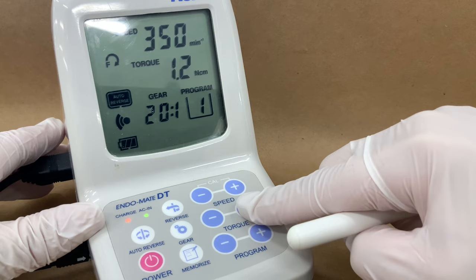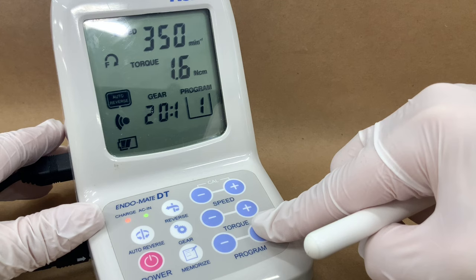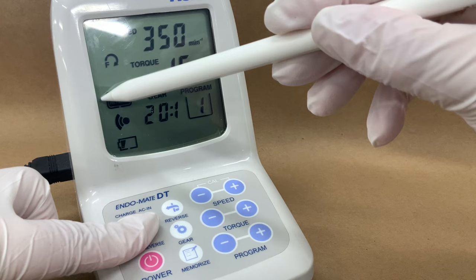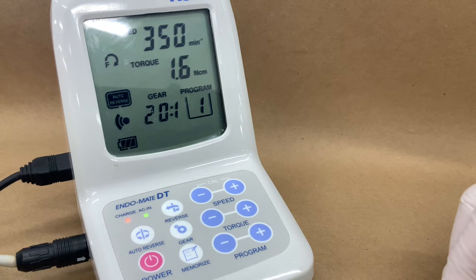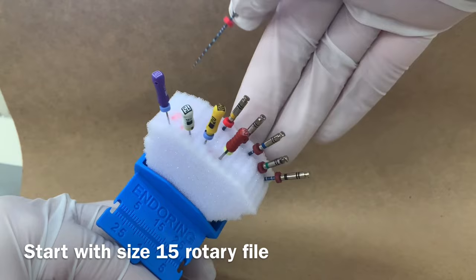Adjust the speed to 350 and torque to 1.6. The auto-reverse function should be on with the bracket around the icon. This is a built-in safety measure. When the unit reaches a given torque, it will automatically stop and auto-reverse out of the canal, disengaging the file from the dentin.